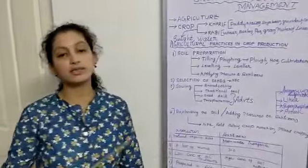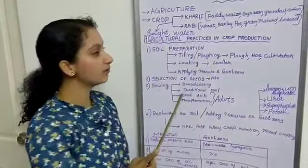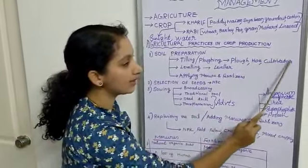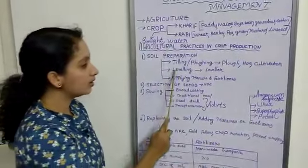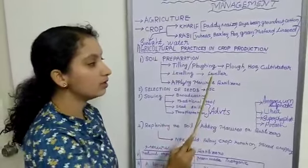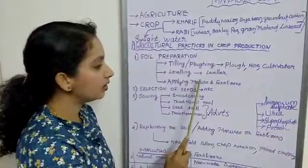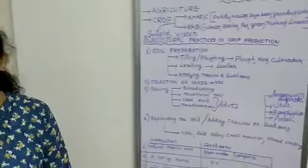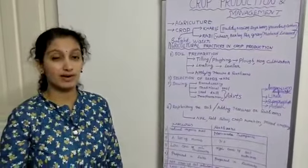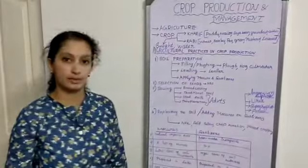First is soil preparation. We have to follow these steps for preparing the soil before cultivating a type of crop to get a good yield: tilling or ploughing using the implements plough, hoe, or cultivator; leveling using wooden or iron leveler; and applying manure and fertilizers. The third step is optional, depending on the type of soil if it requires nutrients.